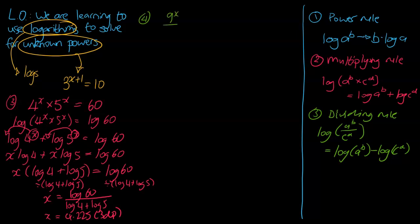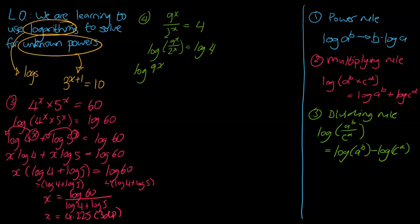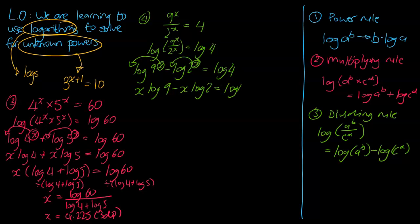Let's say we've got 9 to the power of x divided by 2 to the power of x, and that equals 4. Straight away, unknown powers means log rules. So I'm going to log both sides: log(9^x / 2^x) equals log 4. We've got division, so we make that subtraction: log(9^x) minus log(2^x) equals log 4. Now apply the power rule to move the unknown powers to the front: x log 9 minus x log 2 equals log 4. Same process as before — we factorize: x(log 9 minus log 2) equals log 4.